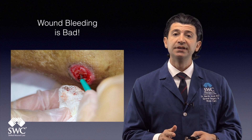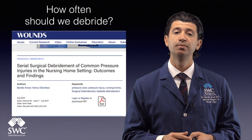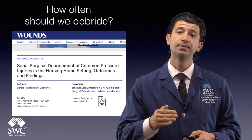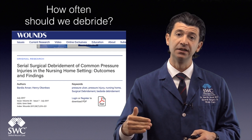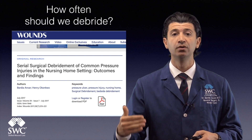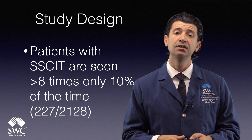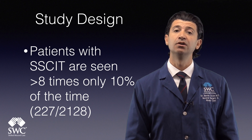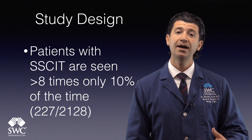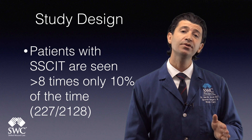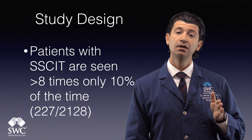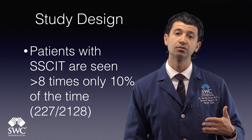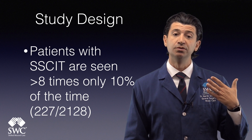The next question we often get is: how often should we debride? In our practice, we performed a retrospective study published in July 2017 in the journal Wounds, where we looked at multiple repetitive visits for patients — specifically how often patients seen over a prolonged period of time required debridements. We examined patients who had wounds on the sacral coccyx, ischial tuberosity, or trochanteric regions. Only 10% of the time were these patients seen greater than eight times; 90% of patients were seen less than eight times, and they were doing very well.